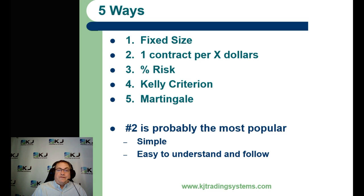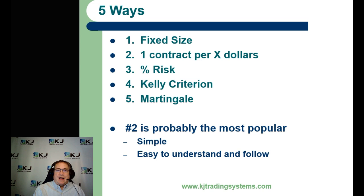We're going to look at five ways: fixed size, one contract per a certain number of dollars, a percent risk method, the Kelly criterion, and then a martingale. Number two is probably the most popular because it's pretty simple and easy to understand — like trading one ES contract for every twenty thousand dollars in your account, and when you go to forty thousand you can increase your size.